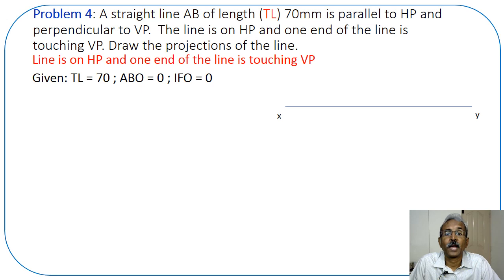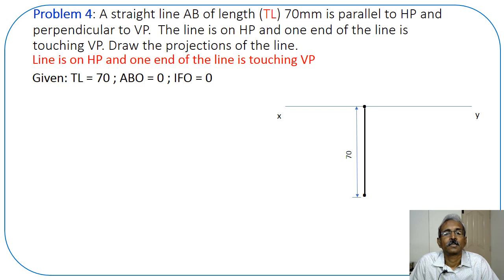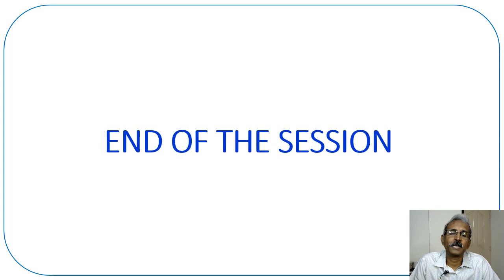Draw the XY line. Since IFO is 0, the top view starts on the XY line; draw a line of length 70 mm. The front view is a point, and since ABO is 0 it is also on the XY line - it is the same point. Mark dimensions: length 70, ABO and IFO both 0. AB is the top view; A-dash in brackets and B-dash is the front view. This brings us to the end of Session 3. Thanks for watching and see you in the next session.